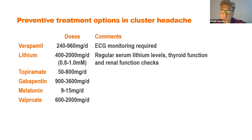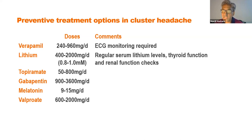Other preventive options are largely based on open-label evidence: lithium, topiramate, gabapentin, melatonin, and valproate. One important note is that patients often need much higher doses than usual — topiramate up to 800 mg, gabapentin up to 3600 mg, melatonin 15 mg per day, and valproate up to 2 grams per day.